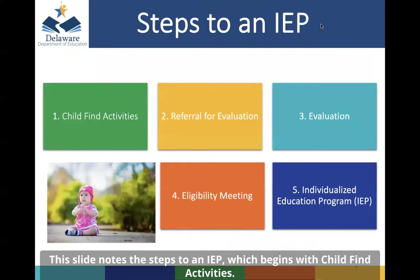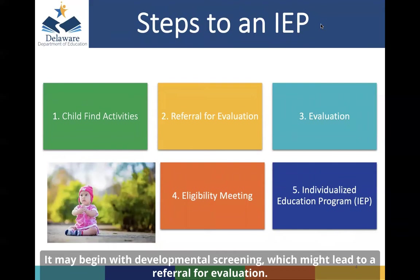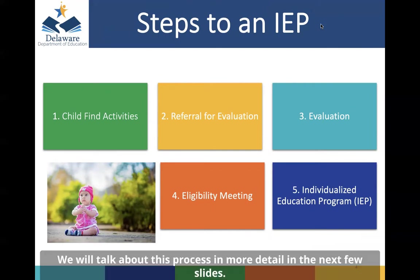This slide notes the steps to an IEP, which begins with child-find activities. Child-find activities are a way to reach out to the community to identify children who may be in need of further evaluation. It may begin with developmental screening, which might lead to a referral for evaluation. After receiving the referral, an evaluation occurs, followed by an eligibility meeting and development of an IEP.